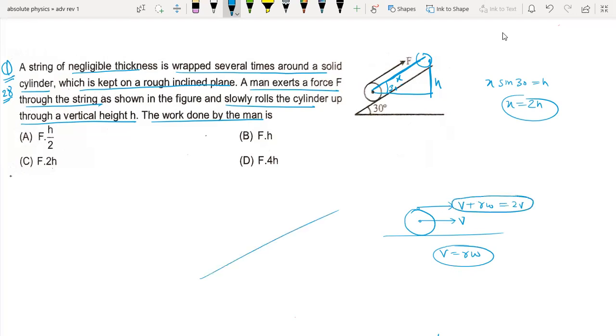That means when it rolls on the inclined plane, if this point travels distance x which is 2h, then the string unwinds 4h. The work done by the force is F into 4h, so option D is correct.